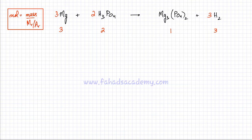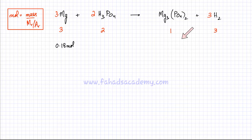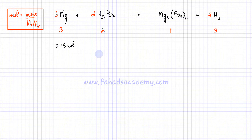Let's say I have 0.18 moles of magnesium. The first thing I want to do is figure out how many moles of phosphoric acid are needed for this reaction, and how many moles of magnesium phosphate and how many moles of hydrogen gas are going to be produced. So first we're going to figure out the amount of H₃PO₄.